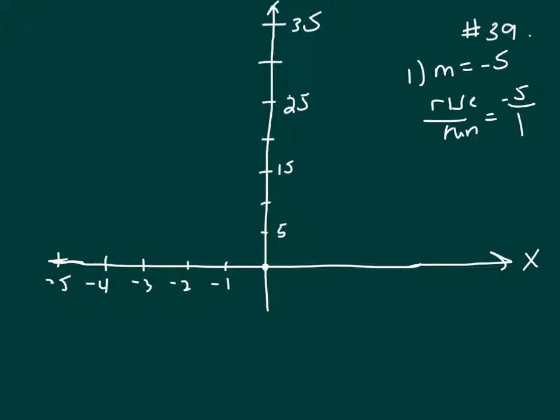And the problem tells me that it passes through the point negative 5, r. I don't know whether r is positive or negative, but I know that here is negative 5. So it's going to have to pass through someplace on that line there, where x is negative 5. So let's say it passes through negative 5 comma 35.